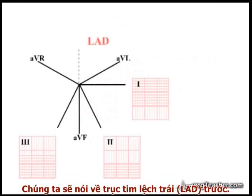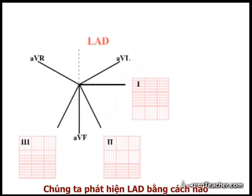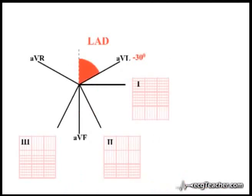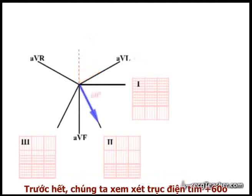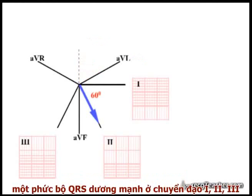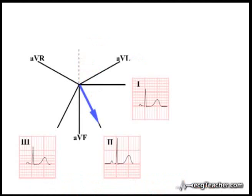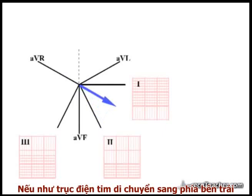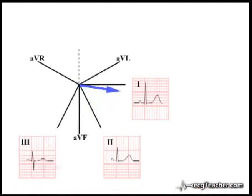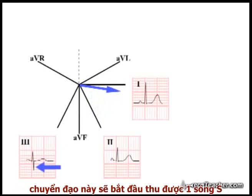To deal with LAD first — how do we recognize left axis deviation? That is, deviation of the cardiac axis beyond minus 30 degrees. If we start by considering an axis of plus 60 degrees, this situation is characterized by strongly positive QRS complexes in leads 1, 2, and 3. As the axis moves towards the left, towards and then beyond 90 degrees off lead 3, this lead will begin to develop an S wave.